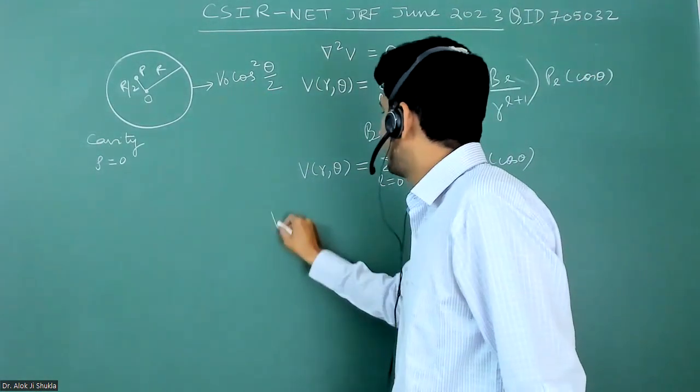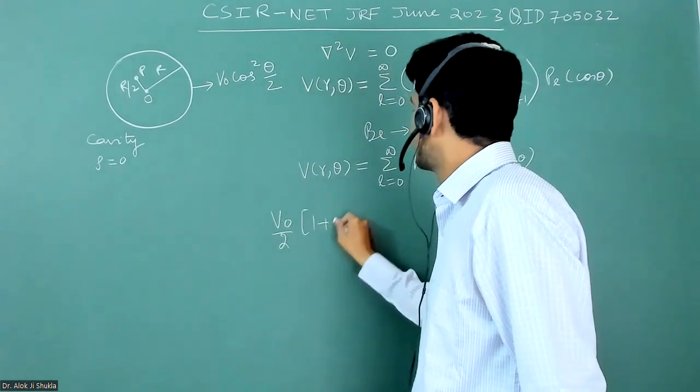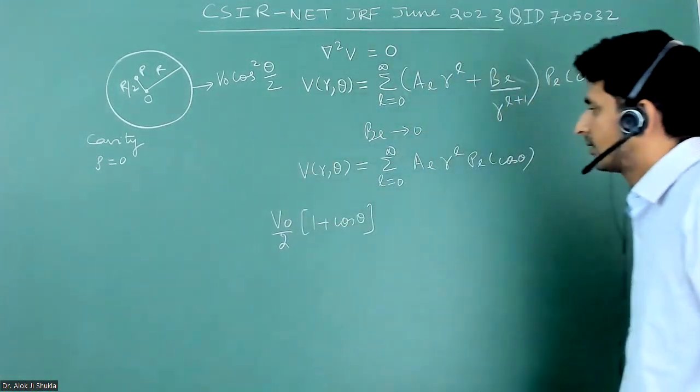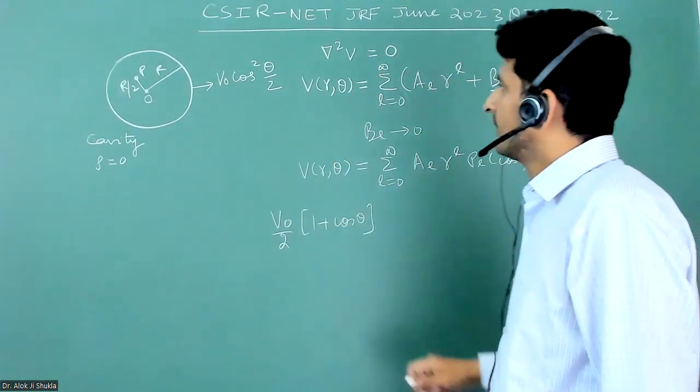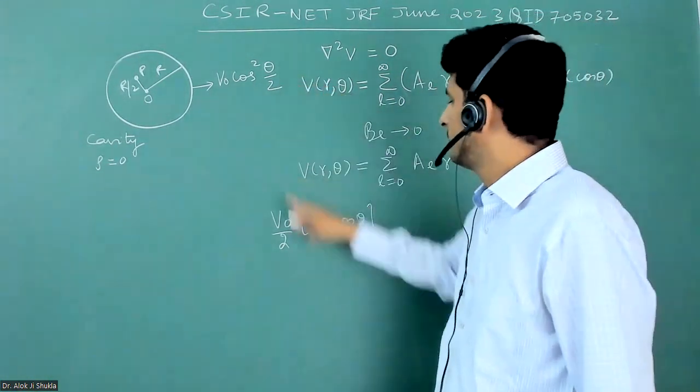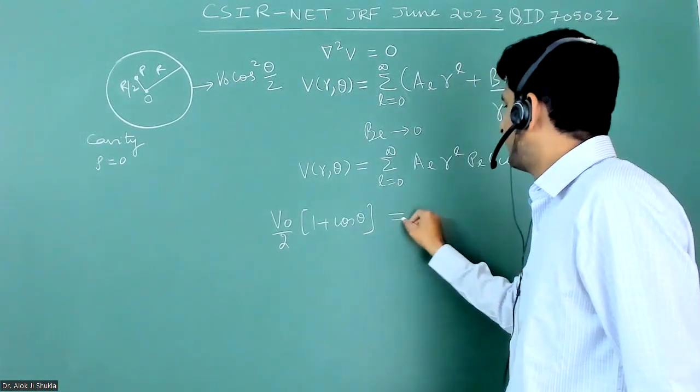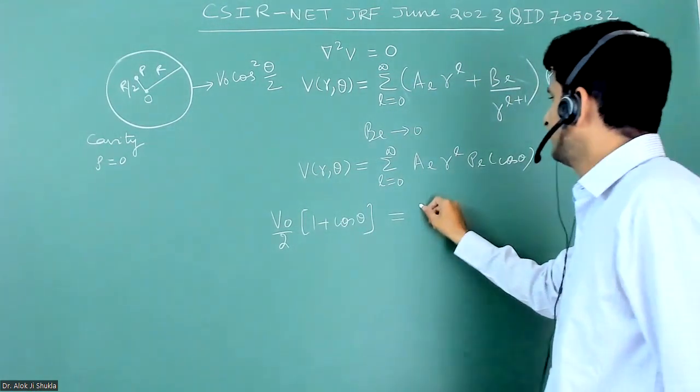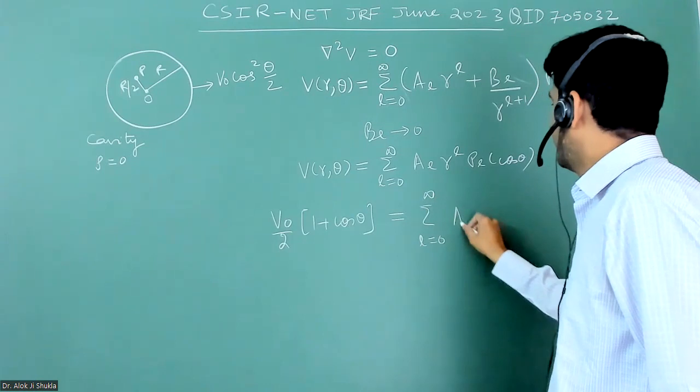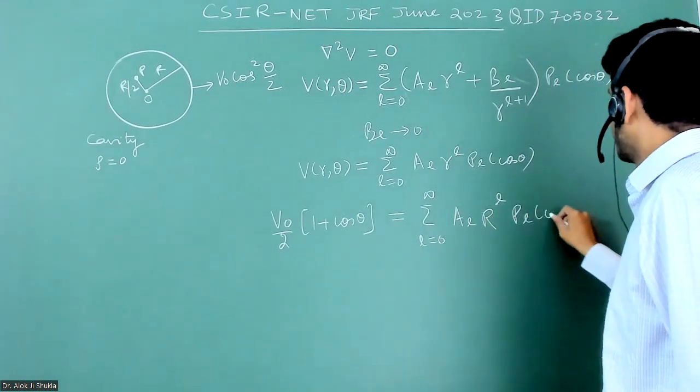That means the potential should become V₀ by 2 times (1 plus cos theta). I have just applied the trigonometric formula that cos square theta is (1 plus cos 2theta) by 2. This will become, because it is theta by 2, it will become theta. This is equal to summation L equals 0 to infinity: AL R to the power L times PL cos theta.